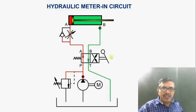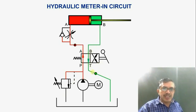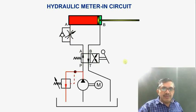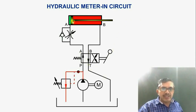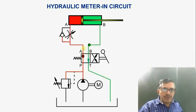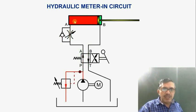Look at this animation. When the lever is kept in the first position, P to A and B to T connection is made, oil flows into the cylinder and the cylinder extends. When the lever is shifted to the other position, P to B and A to T connection is made and the cylinder retracts. During extension, oil flows through the flow control valve, which is why the cylinder extends slowly.